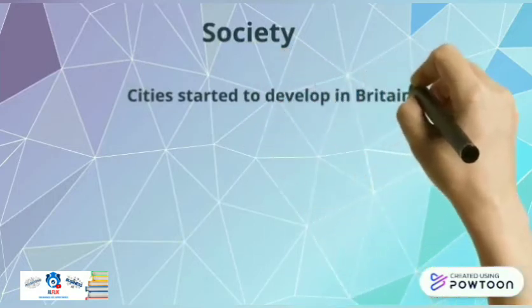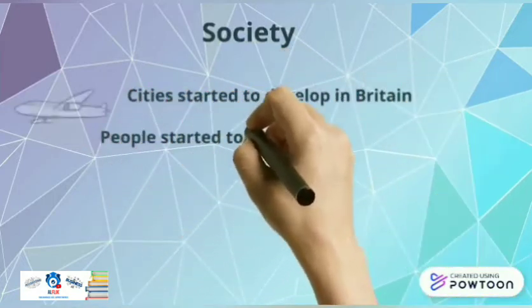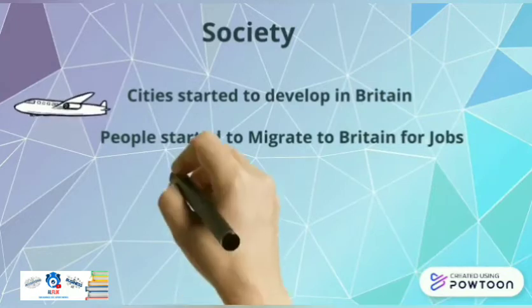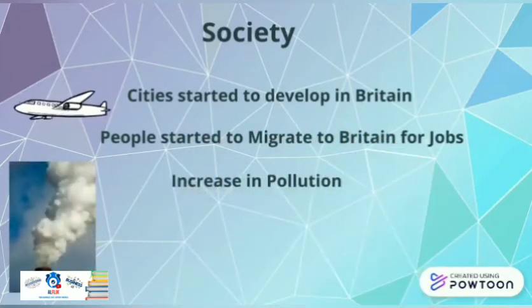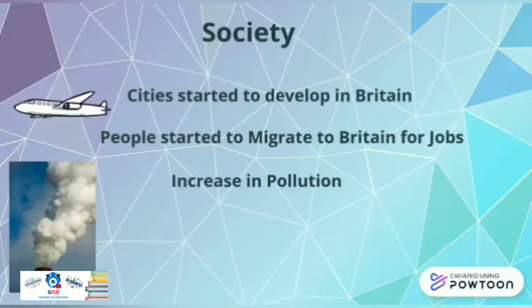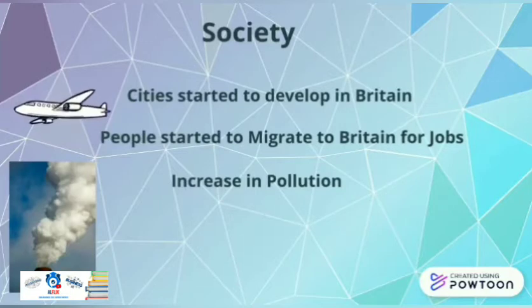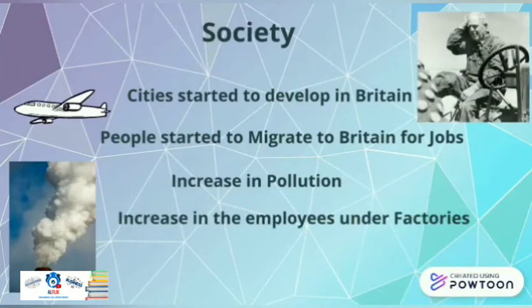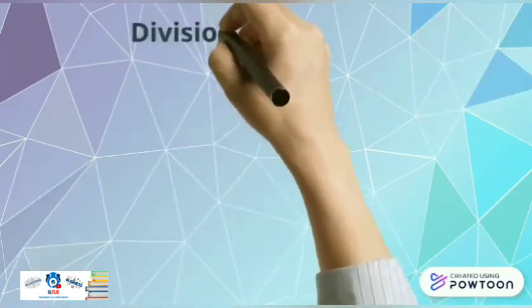It also had a great impact on society as well. New cities were developed in Britain, and many people started to migrate from other countries to Britain to obtain jobs. Pollution started to increase with the rise in use of machineries — lots of air pollution, sound pollution, etc. Prior to the industrial revolution, many were employed in the agriculture sector, but they gradually started to work for factories.